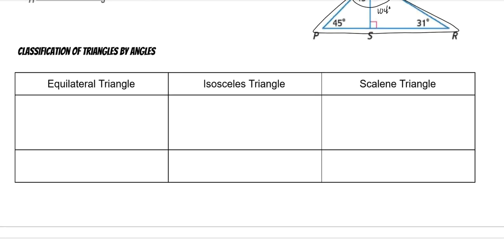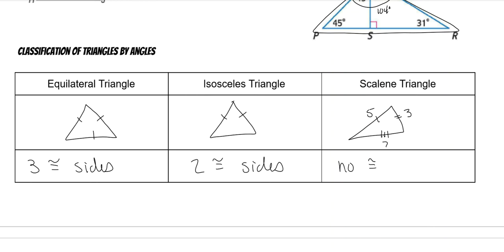Now we're going to classify by sides. Equilateral triangle has three congruent sides. Isosceles triangle has two congruent sides. And a scalene triangle has all sides different, or it might give you actual angle measures. So no congruent sides or equal sides.